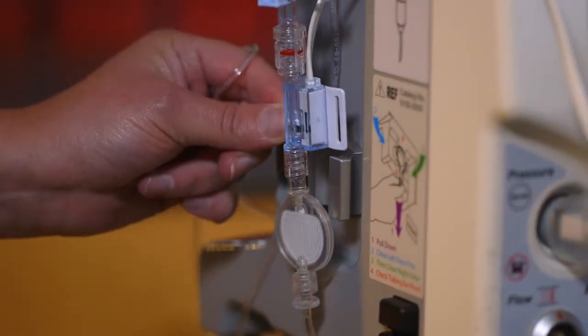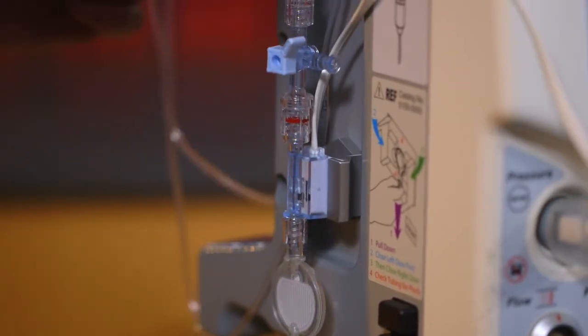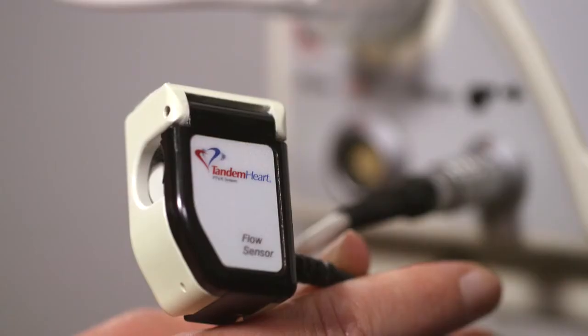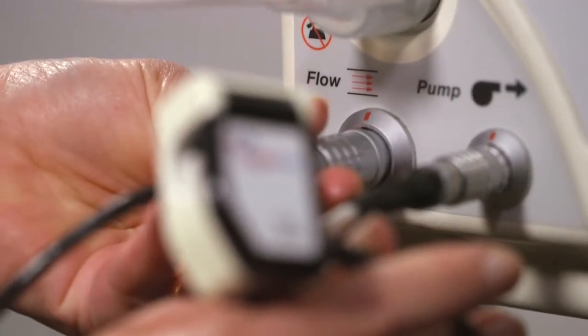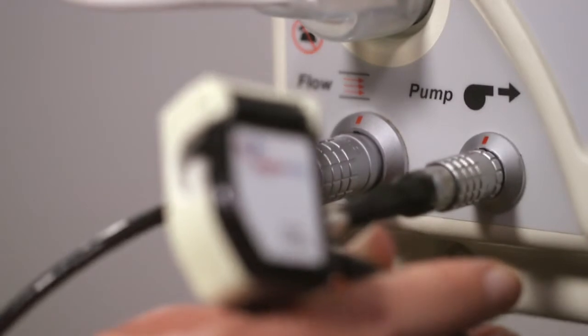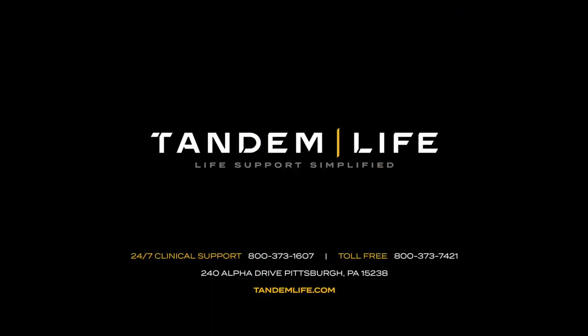The infusion lacing process is completed by placing the pressure transducer into the mounting bracket. The optional integrated flow sensor can be placed on the pump outflow tubing and plugged into the controller. For more information, contact your local TandemLife representative.